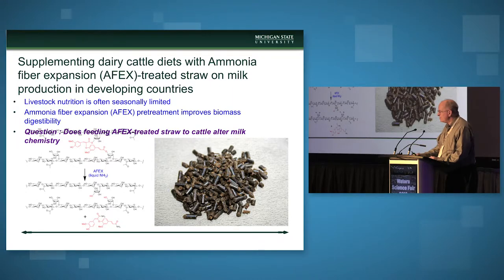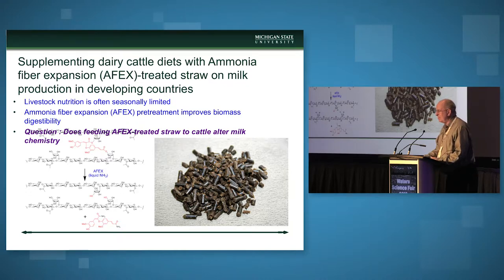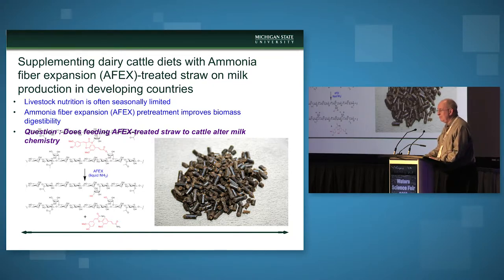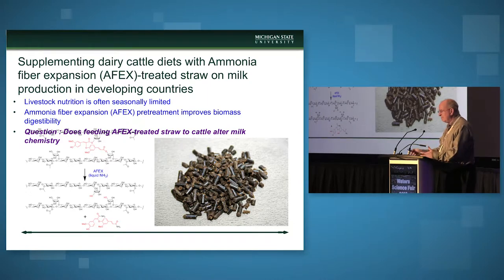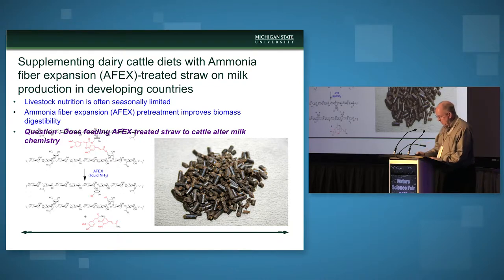Although this process was developed largely for bioenergy applications, by making waste products — the straw from rice, wheat, or corn — into animal food, you have the potential to increase milk production and improve animal health. Once this waste material is processed with ammonia, you can convert it into pellets and add this to animal feed.